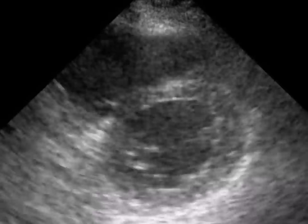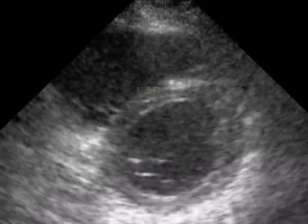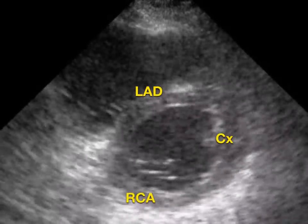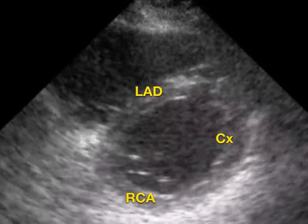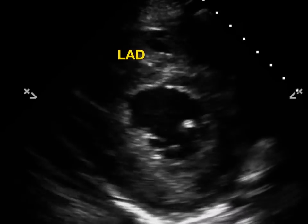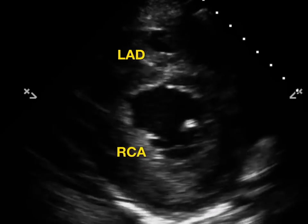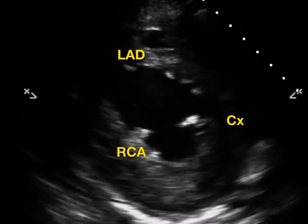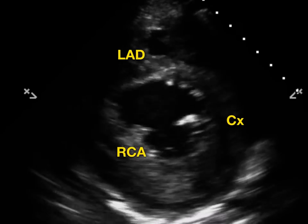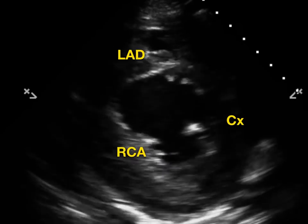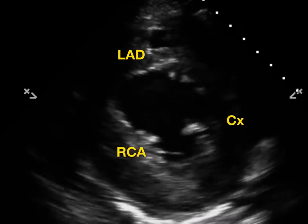Let's look at some examples. Get your bearings and see what you think — you've got the LAD, the RCA, and the circumflex. This first one is normal, no akinesis. Next, take a look at this one: the LAD area looks like it's moving pretty well, the RCA maybe not so much, and the circumflex maybe a little bit — but it's tough. I would have difficulty discerning for sure between RCA or circumflex. In a case like this, you'd certainly want to get more views to nail down where that regional wall motion abnormality is.